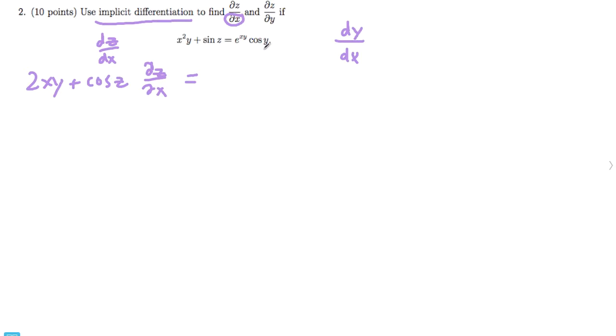Now taking the derivative of this with respect to x, you would just get y cosine y e to the xy. Now we want to isolate dz over dx. So we move everything to the other side. So cosine of z times dz over dx equals y cosine y e to the xy minus 2xy.